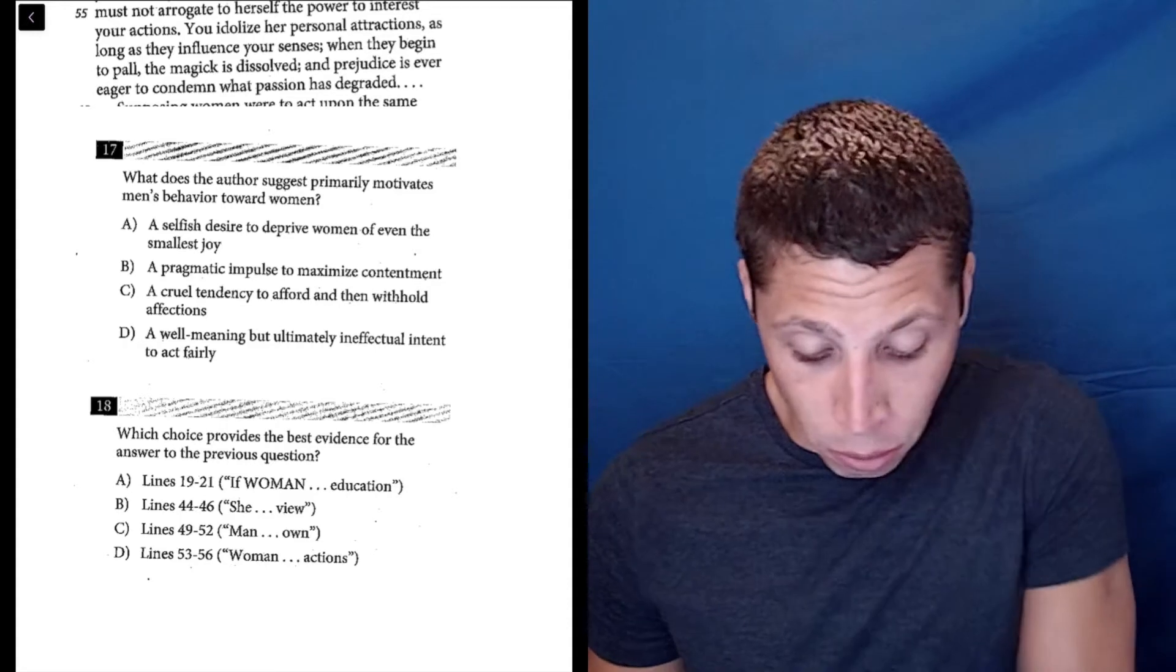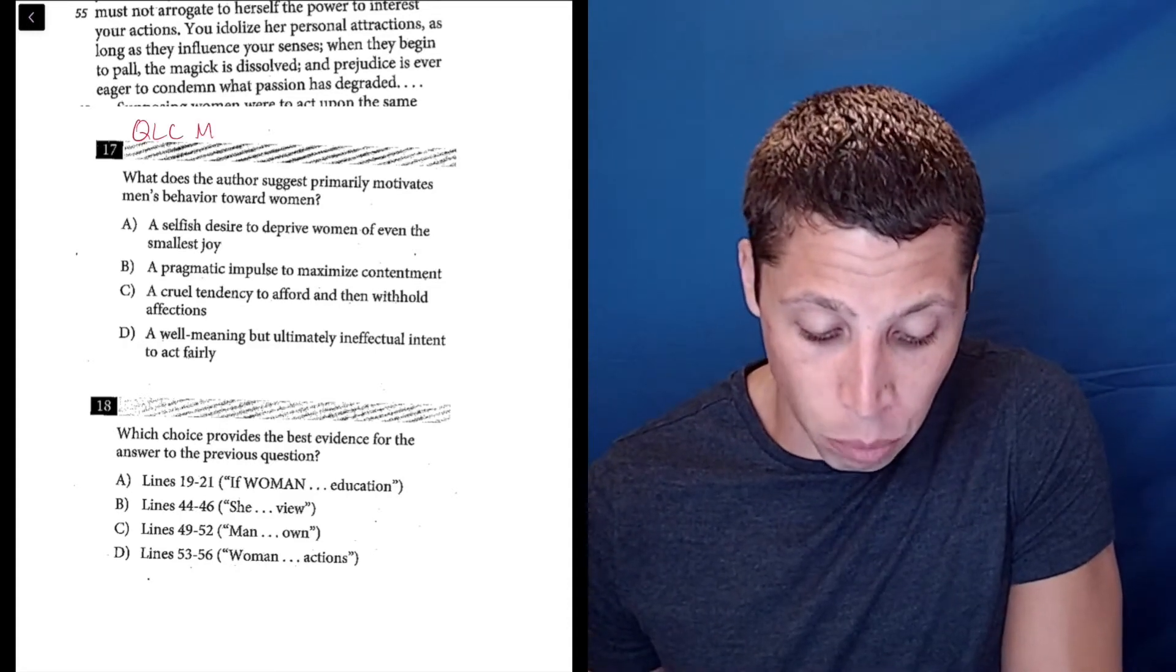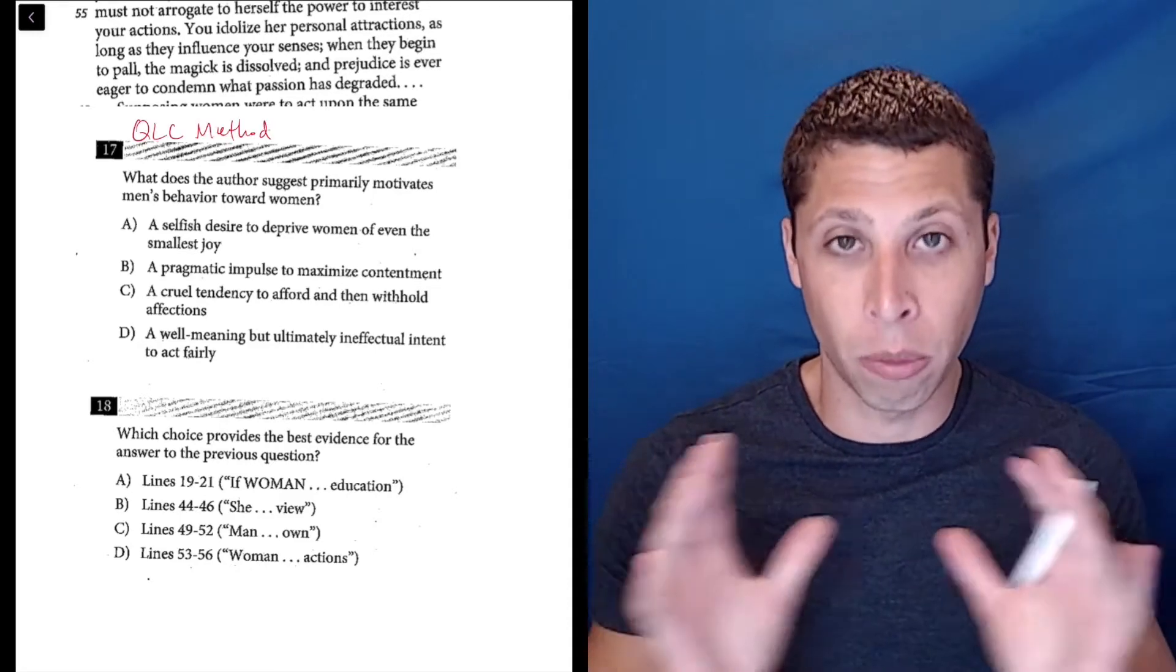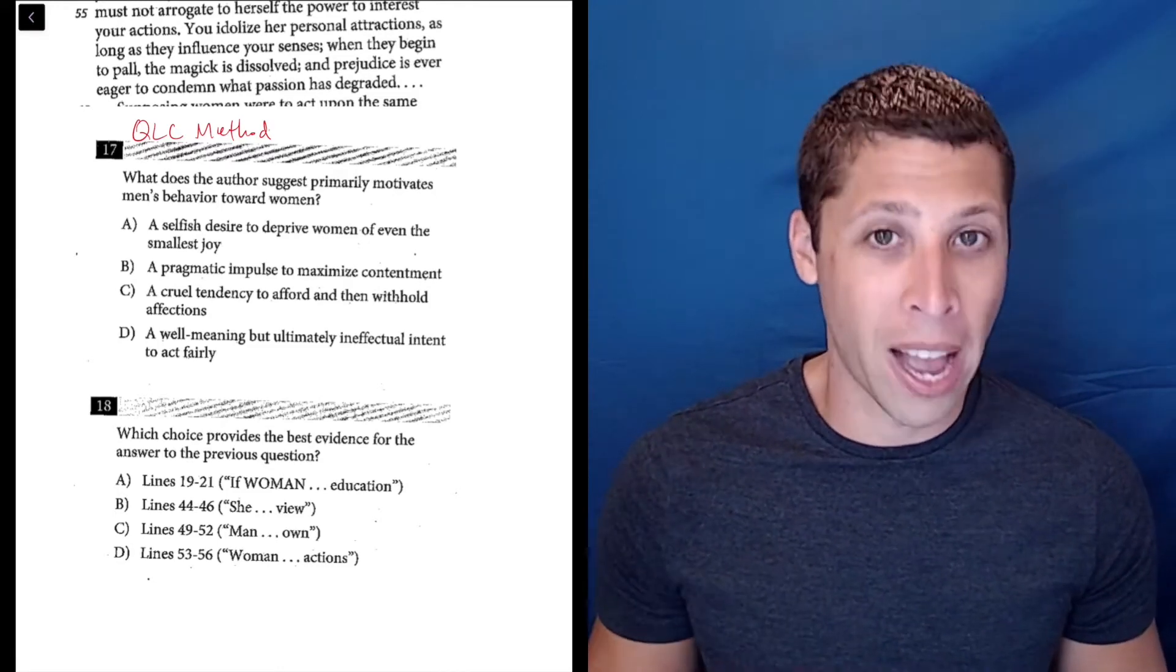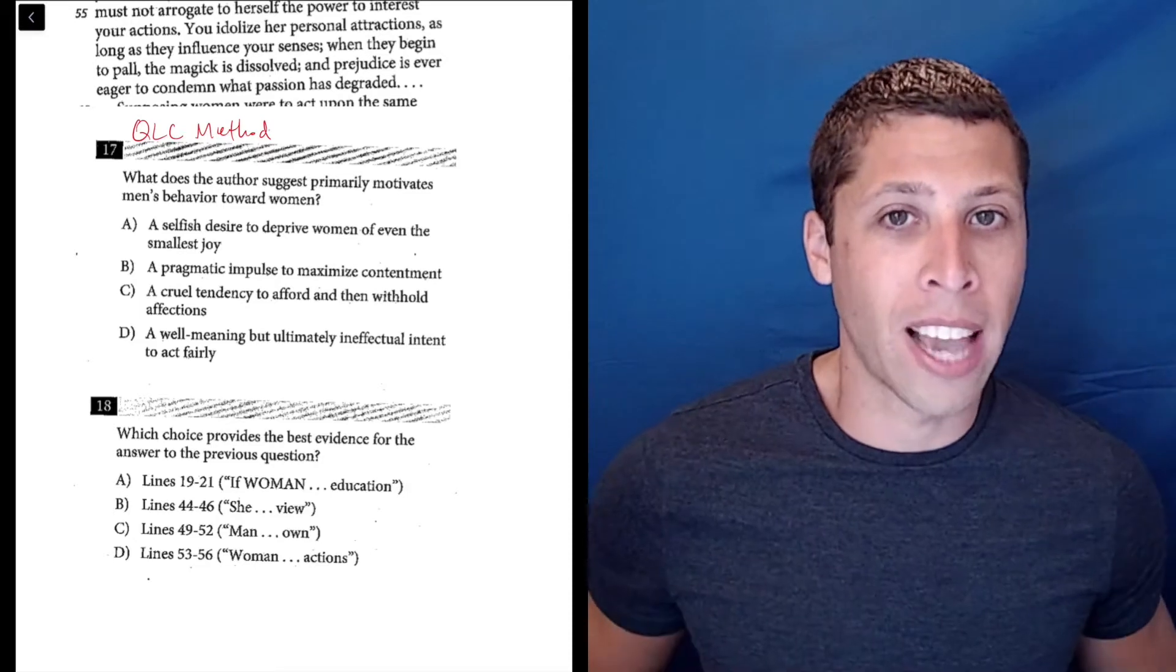We're going to still follow the normal QLC method, which means we have to take this pair in a weird order to make sure we stay organized and do our best to understand the very difficult passage.